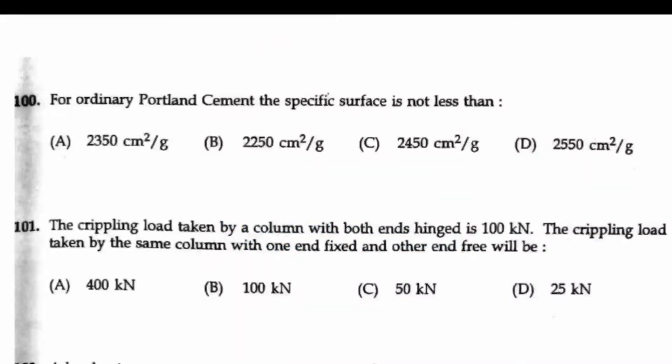Question 100, for ordinary Portland cement the specific surface is not less than option B, 2250 cm squared per gram.